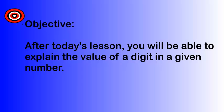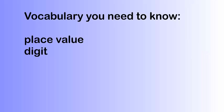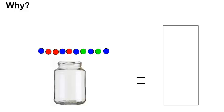Today we're going to talk about the objective. The objective is what you need to get out of the lesson. So by the end of the lesson, after today's lesson, you will be able to explain the value of a digit in a given number. The vocabulary you need to know is place value and digit. Both of those words should be reviewed from third grade, but we're going to take a look at those.